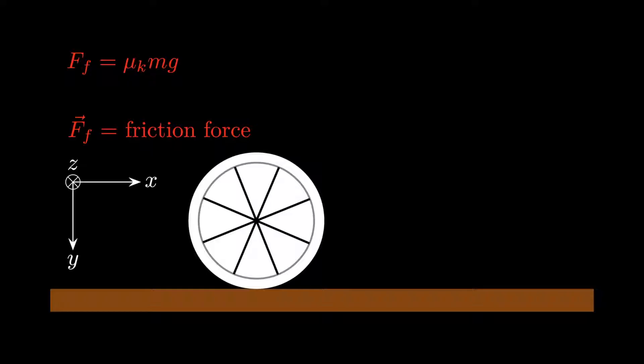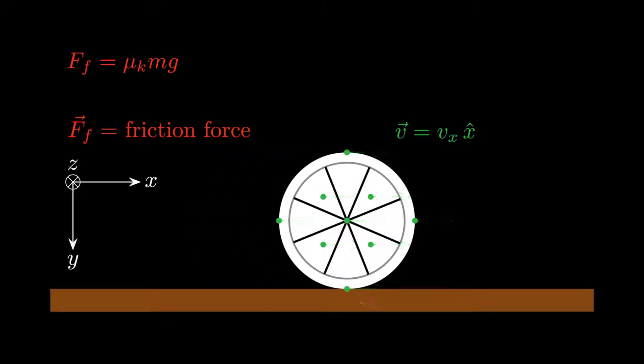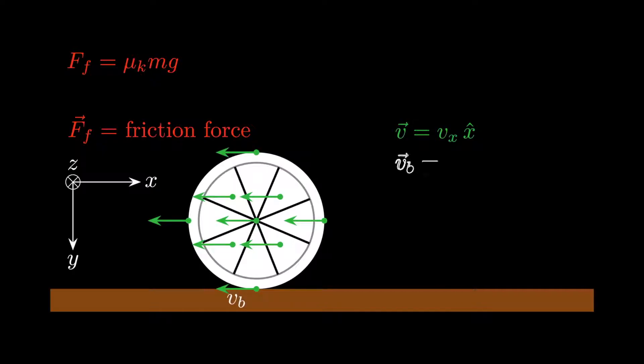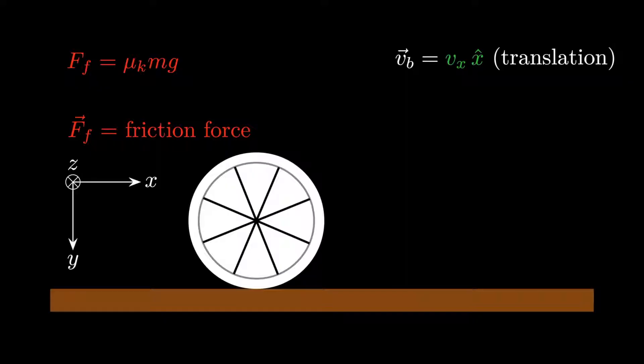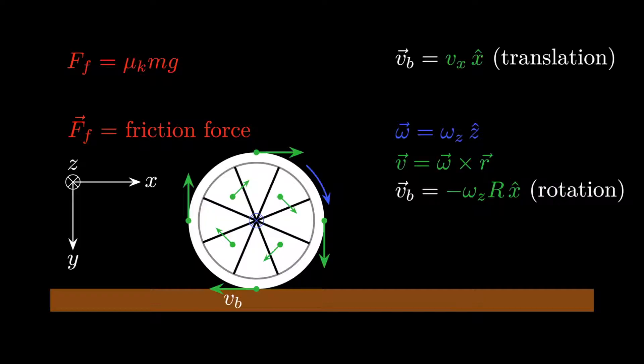First, suppose the object has some given translational velocity. In this case, every point on the object, including the point at the bottom, will have the same velocity. Thus, the velocity of the point that's in contact with the ground is simply equal to the translational velocity of the object. Similarly, suppose the object rotates about the z-axis with a given angular velocity. In this case, each point on the object will circle around the center of the object, with a speed that's proportional to its distance from the center. But notice that a negative rotational velocity causes the bottom of the object to move in the positive x direction, while a positive rotational velocity causes it to move in the negative x direction. This observation allows us to determine an expression for the velocity of the point at the bottom of the object due solely to rotational motion.